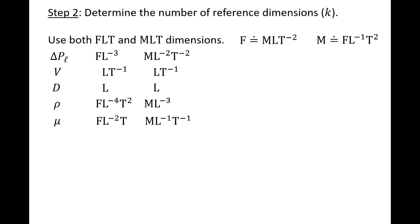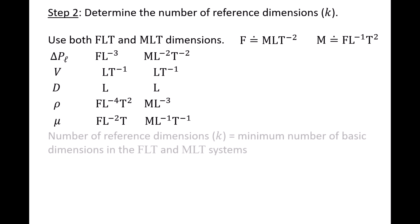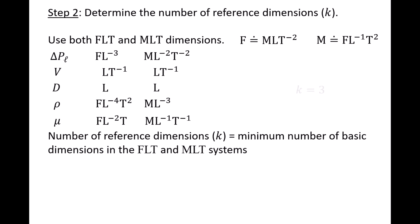Now we count the number of basic dimensions that appear in the FLT and MLT systems. Notice that F, L, and T are required to describe the dimensions of the variables in the FLT system, and M, L, and T are required in the MLT system. In order to find the number of reference dimensions k, we compare the number of basic dimensions needed in both systems and take the smaller of the two numbers. In our case, the number of basic dimensions is the same in both systems — it's 3 — and so this is our value of k.